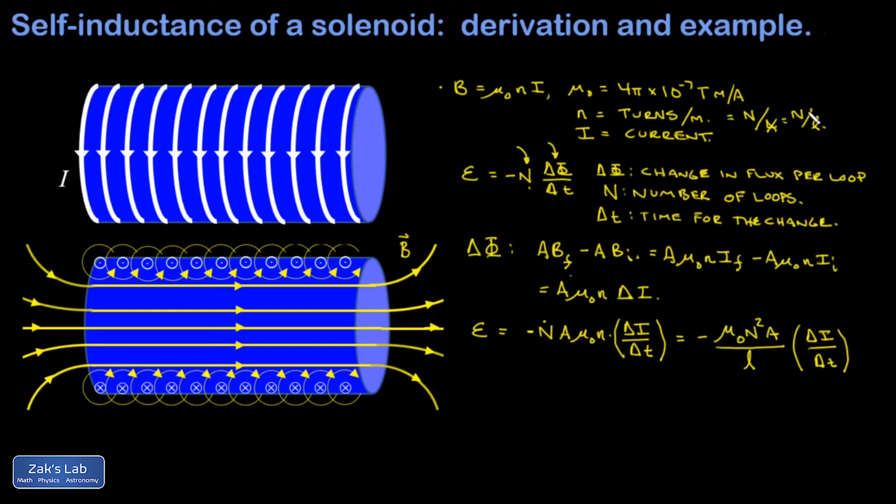This constant of proportionality, when I get the induced EMF proportional to the rate of change in current, is called the inductance or self-inductance of the coil. That's a way of quantifying how intensely this coil is going to resist changes in current. If my self-inductance is bigger, it means for a given change in current, I'm inducing a bigger EMF to resist that change.